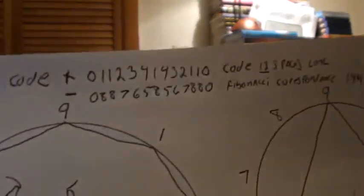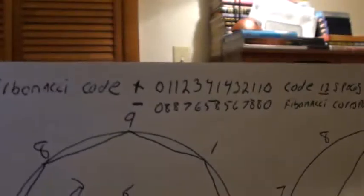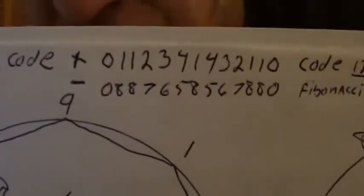That number sequence is: 0, 1, 1, 2, 3, 4, 1, 4, 3, 2, 1, 1, 0 — and that keeps repeating. This is produced on the wheel by finding the number of spaces moved from each number in the Fibonacci sequence once reduced to a single digit. The number of spaces moved produces that rhythmic code. Using the shortest number of spaces produces that lower code.